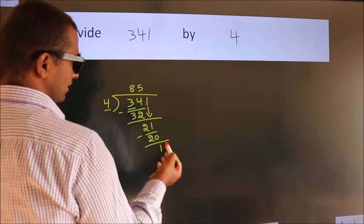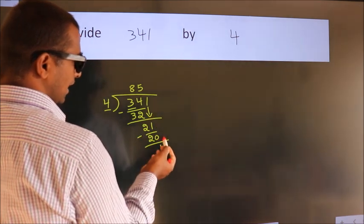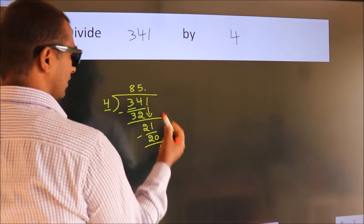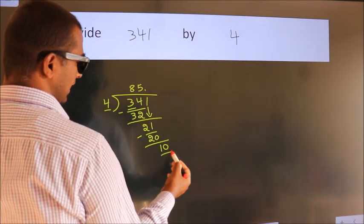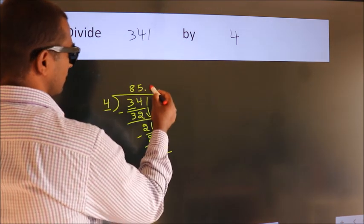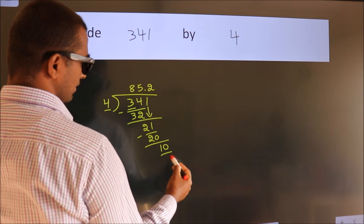After this, no more numbers to bring it down. So what we do is we put dot, take 0. So 10. A number close to 10 in the 4 table is 4 times 2, which is 8.